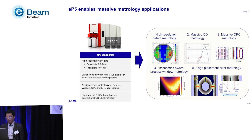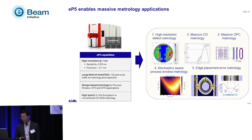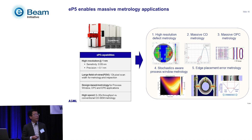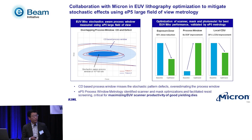Moving on to metrology: HMI provides the EP5 product, which is a different beast compared to traditional CD-SEM. It offers a much larger field of view — up to 12 microns or 12K pixels — and larger beam currents, providing higher throughput. This enables massive metrology applications. One example is our collaboration with Micron for an EUV lithography enablement case.